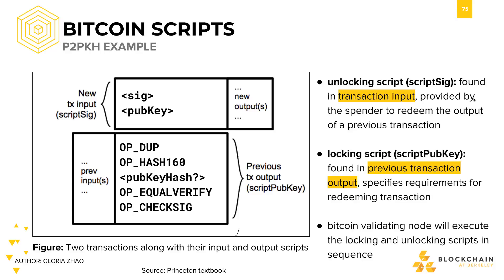Let's walk through an example of how a script works under the hood. The example at the top of the screen is a script that specifies the most common type of transaction in Bitcoin, which is to redeem a previous transaction output. To redeem this previous transaction output, we need to provide our identity with first, a public key that when hashed yields the address to which the previous transaction was sent, and second, a signature that proves ownership of the private key corresponding to the public key we provided. This is the most common type of script in Bitcoin. It is called pay-to-pubkey-hash, or P2PKH.